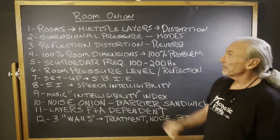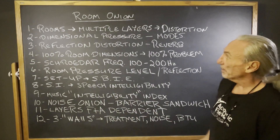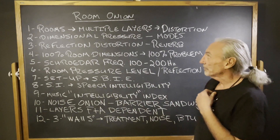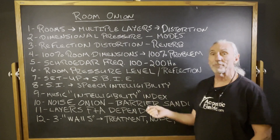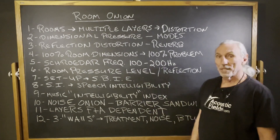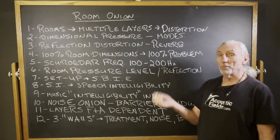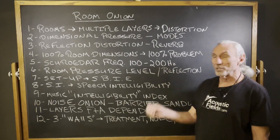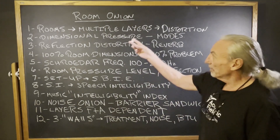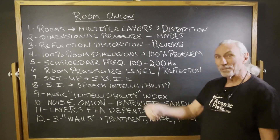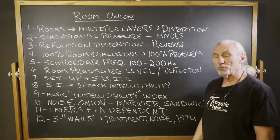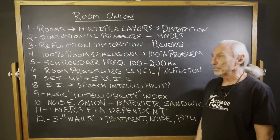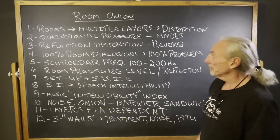Hi everyone, Dennis Foley from Acoustic Fields. Today we're going to talk about room onion. What's an onion? Well, it's lots of layers, and that's what we have to realize with our rooms — not only with our rooms, but the structure itself and everything that goes on inside of it. So rooms are multiple layers, but they're multiple layers of distortion. We have to kind of peel through those layers of distortion to get to the truth, if you will.